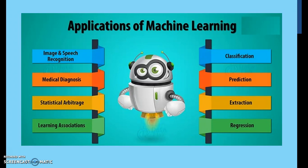Medical diagnosis is another application. Google recently announced a software that scans your retina and tells you what your health condition is and what your risk of getting any health issues might be. For example, a particular retina can be scanned and that person can be told they have a 70% risk of getting a heart stroke. Google is feeding the machine with different types of retinas and their corresponding medical conditions to analyze a person's health.